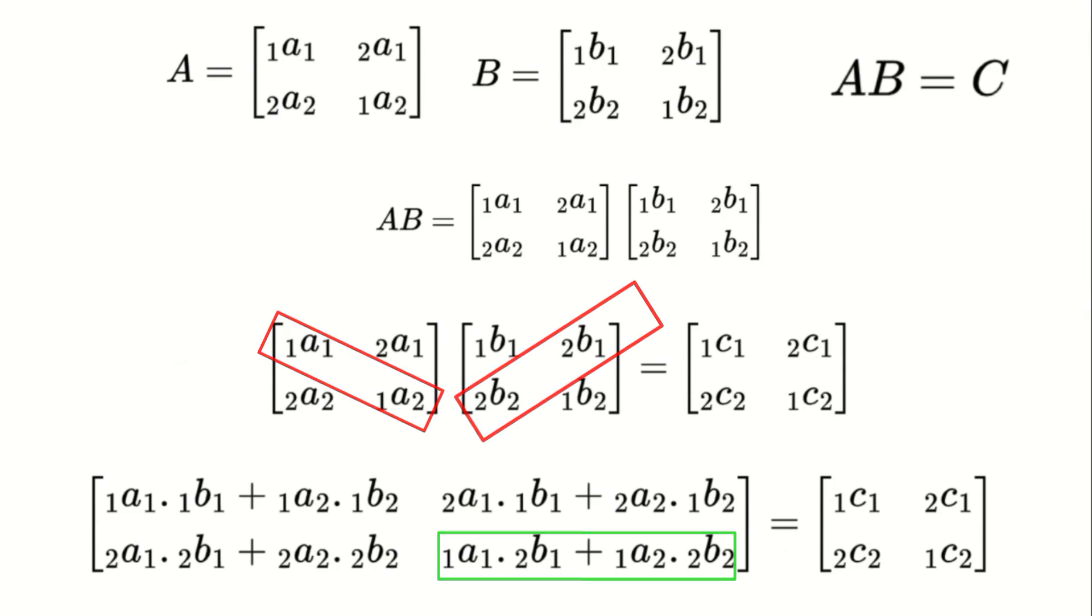By repeating this process for the remaining diagonals, we generate the complete resultant matrix C. Now that you understand diagonal-wise multiplication in the dual matrix system, let's move on to finding the identity matrix.